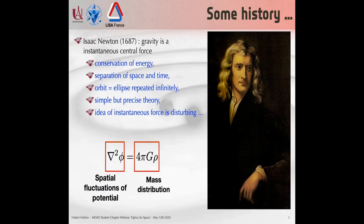Gravitational waves start from gravitation, which comes from Newton. When you talk about Newton's law of gravitation, you have a relationship between the potential and mass distribution. But if you look at it in more detail, there is no mention about time or anything, which means that the gravitational force is instantaneous. Even at the time of Newton, this was disturbing.